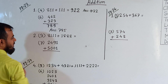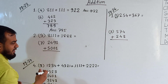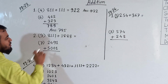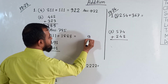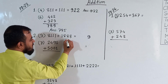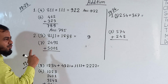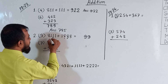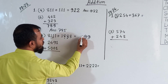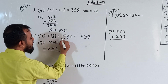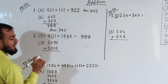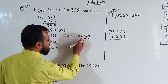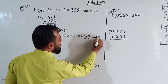Now we will solve question number 2, sub-question number 3. We start from the right side for this horizontal way. In the 1's place, we have 1 and 8; 8 and 1 makes 9. In the 10's place, 8 and 1 makes 9. In the 100's place, 8 and 1 makes 9. In the 1000's place, 1 and 8 makes 9. So our result is 9999.